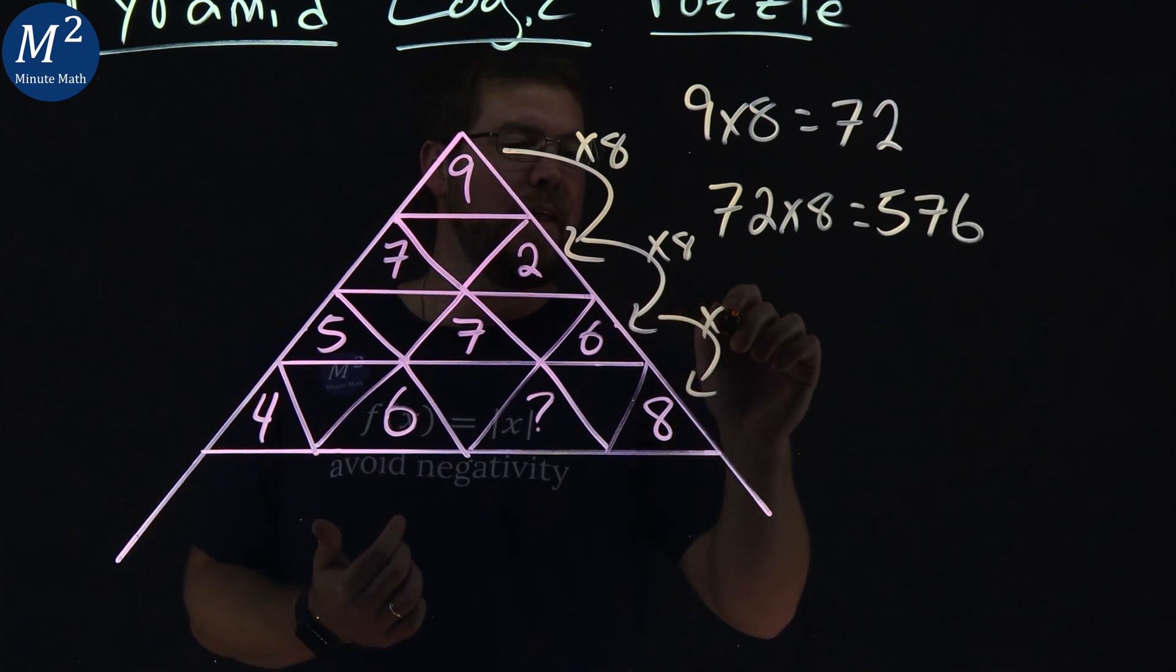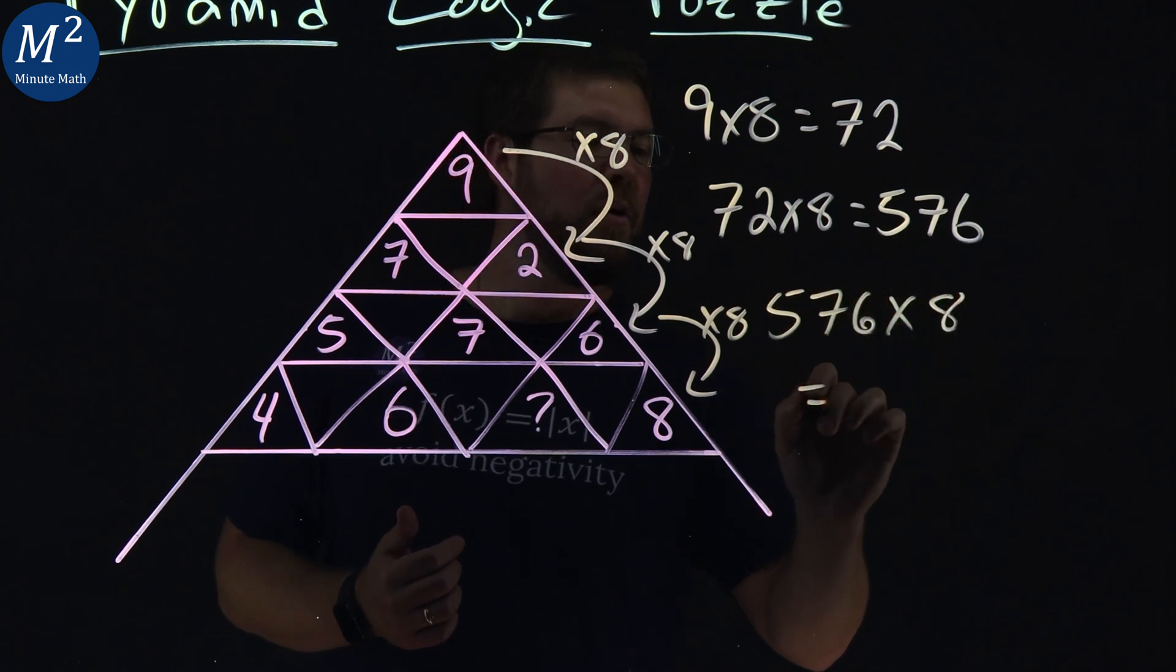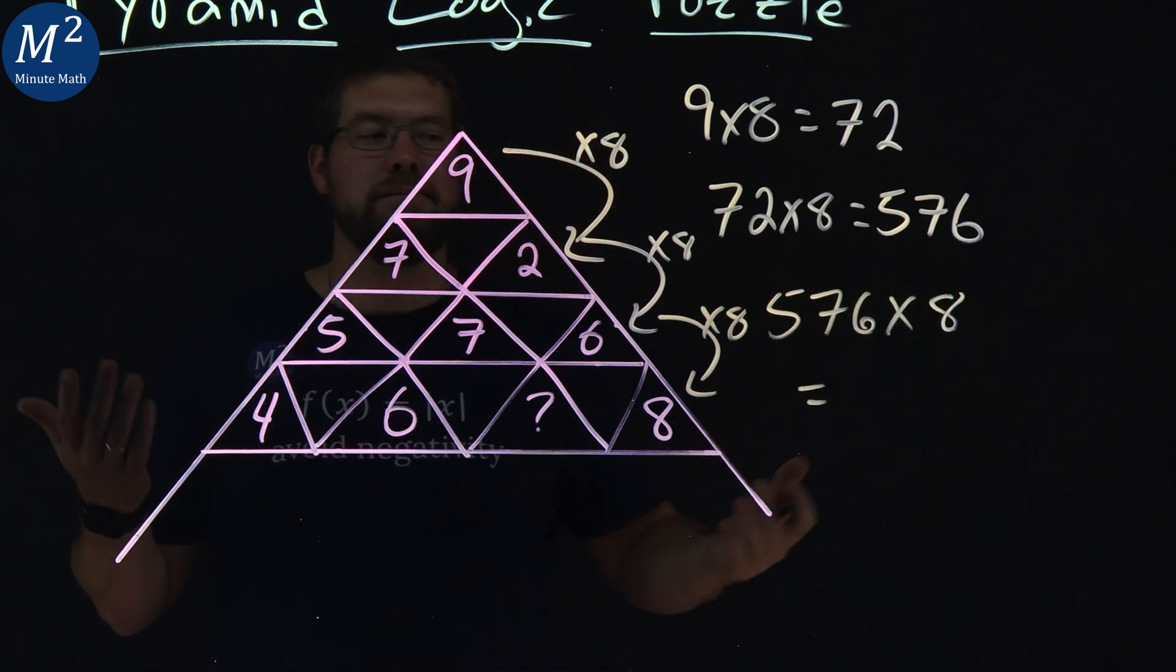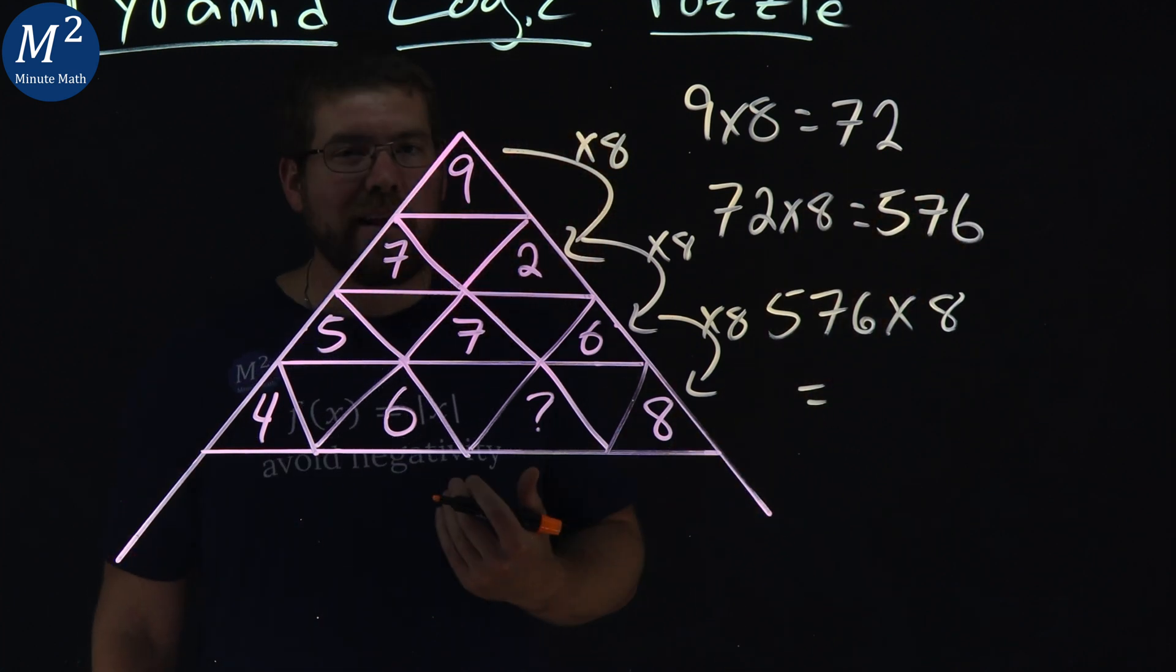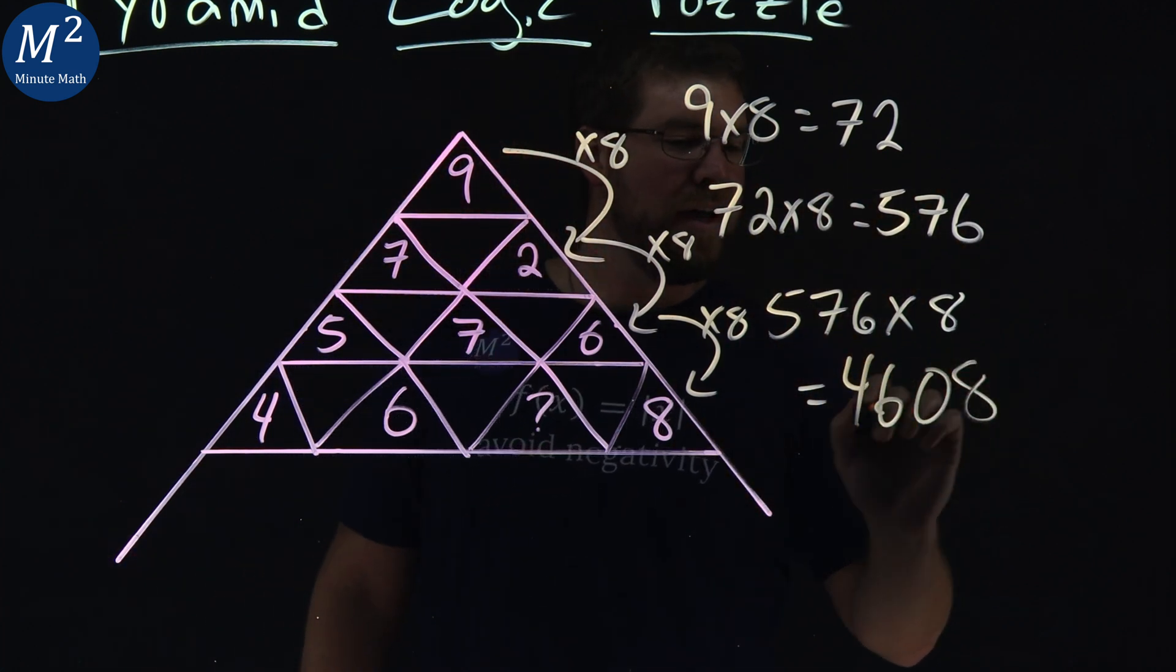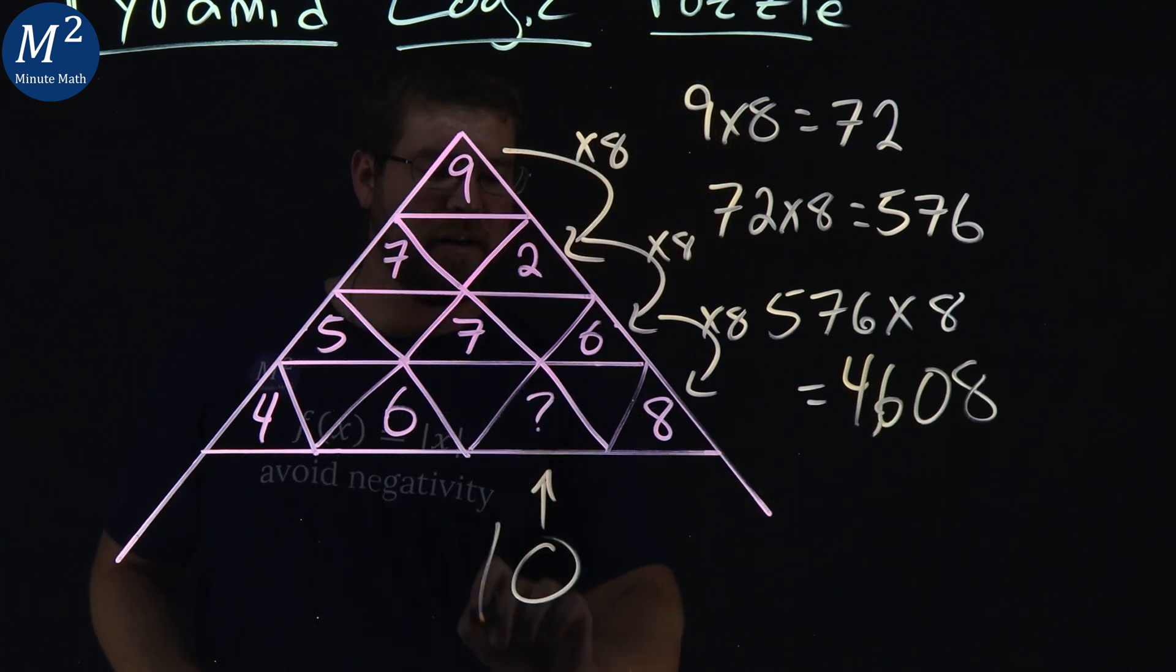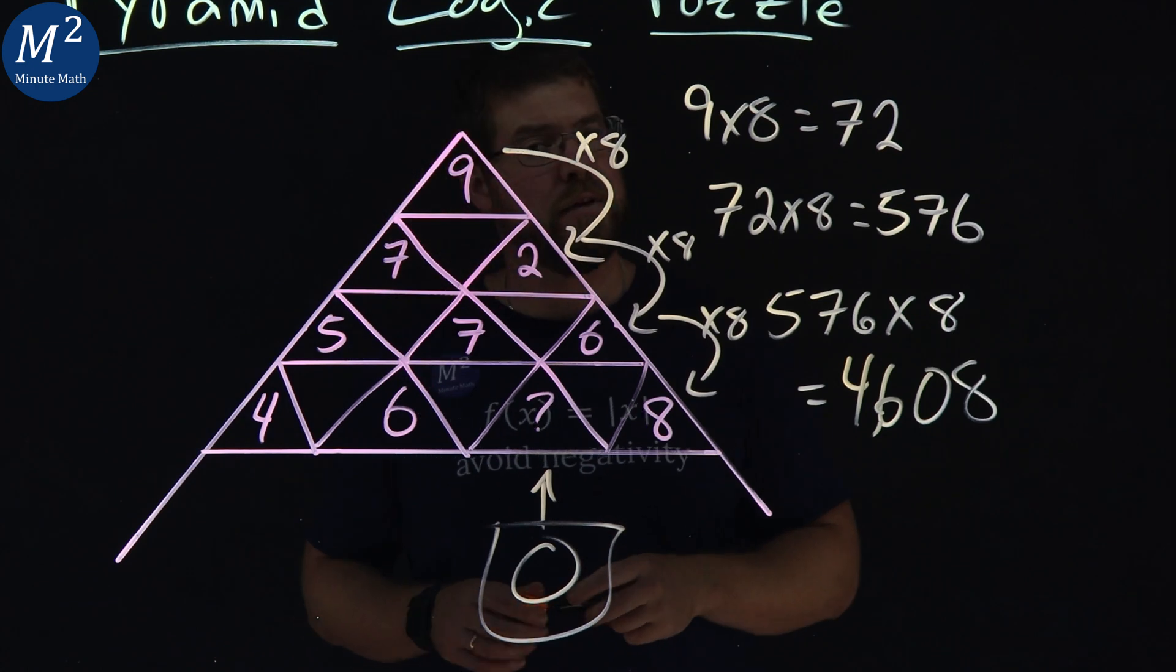Multiply that by 8 here. 576 times 8—what does that equal? I don't know off the top of my head, but luckily I've already done the problem for you. Here we have 4608. Numbers match up: 4, 6, 0, 8. So this little missing number is 0, and it's a lovely number. Zero is a great number here.